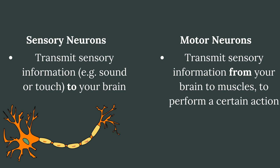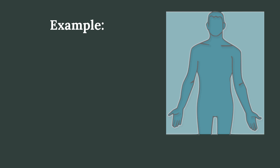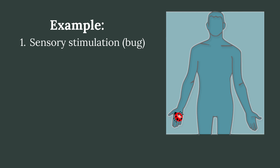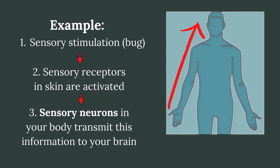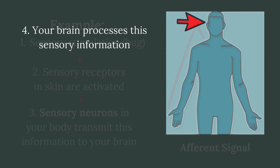Motor neurons, on the other hand, will transmit information from your brain to your muscles with the purpose of performing a certain action. To help explain the interaction between sensory neurons and motor neurons, suppose for instance that you feel something crawling on your hand. This sensory stimulation will cause sensory receptors in your skin to be activated, which in turn will cause sensory neurons in your body to transmit this information to your brain. This is called an afferent signal.